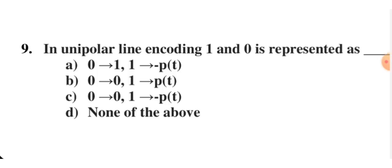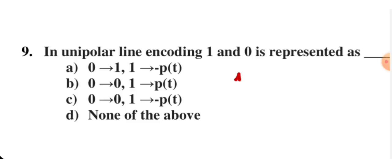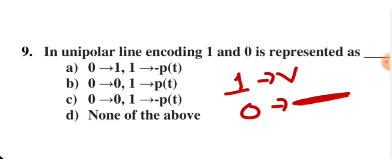In unipolar line coding, 1 and 0 are represented how? Unipolar means one direction only — 1 is represented by a positive voltage, and 0 is represented by zero voltage (DC level). Looking at the options, B is correct because 1 is represented by a positive pulse and 0 by zero voltage. The polarity does not change in unipolar — it only goes in the positive direction.